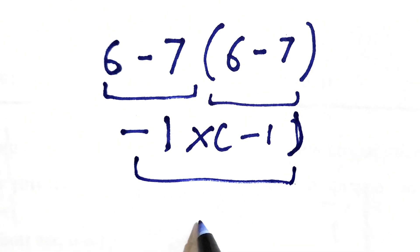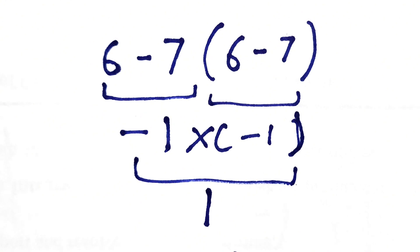So negative 1 times negative 1 gives us positive 1. If you think this is the correct answer, you have to keep watching this video till the end because it's wrong.